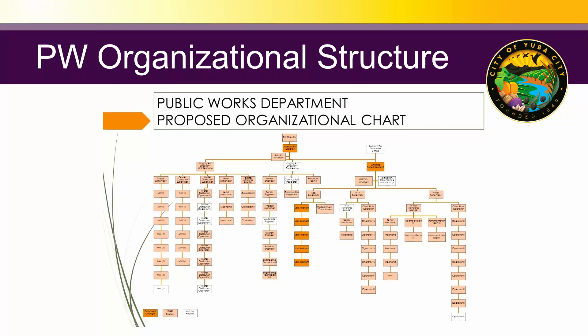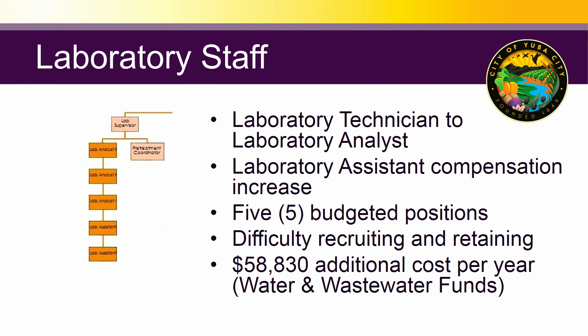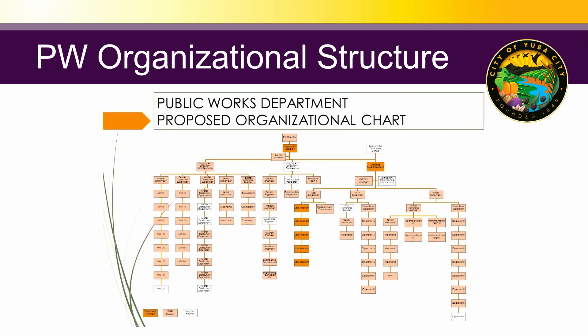We're now on to number 11, Public Works Department classification and compensation adjustments. This item is to provide classification and compensation options necessary to recruit and retain crucial roles within the Public Works Department. Within the Public Works organizational structure, we're looking at addressing three areas: the laboratory staff analyst and assistant, the utility superintendent, and the assistant public works director positions.